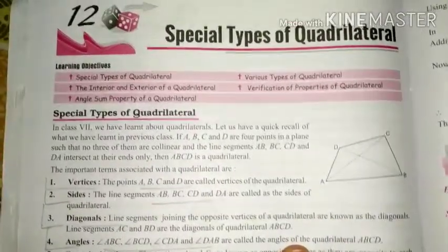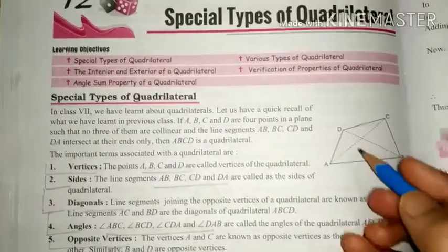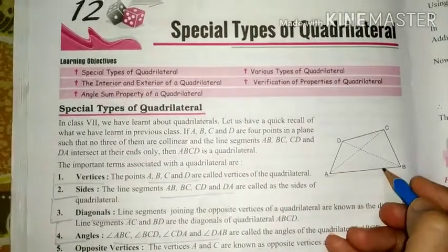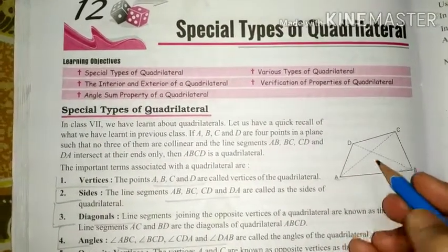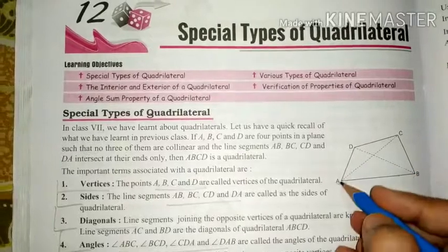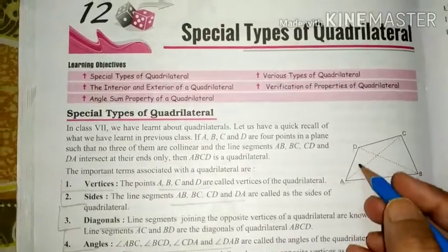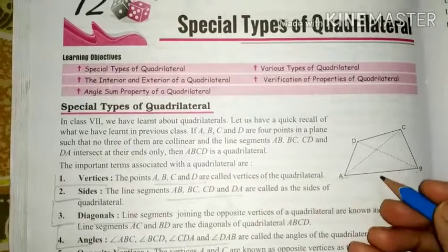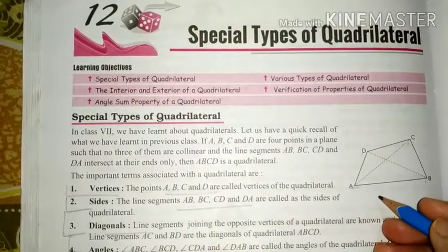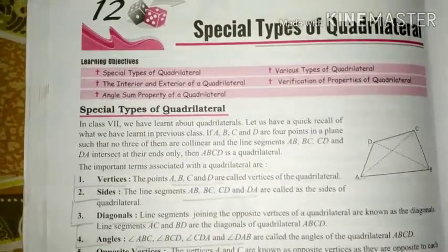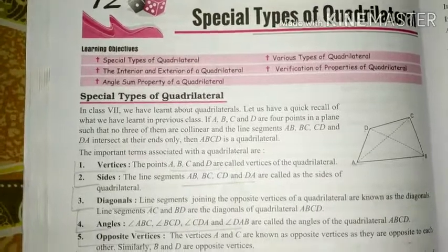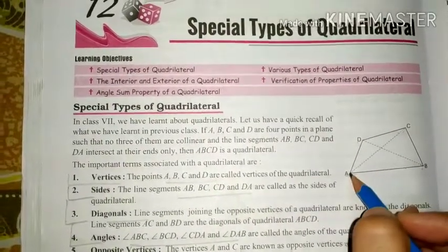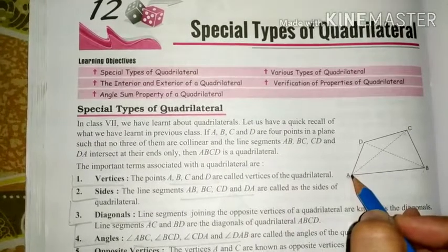Quadrilateral — first of all, what do we understand? A closed figure is called a quadrilateral. How many sides are there? A-B, B-C, C-D, D-A. There are four sides.